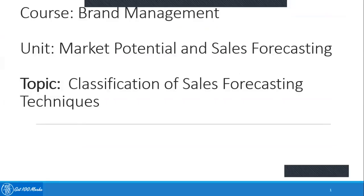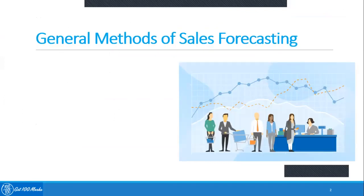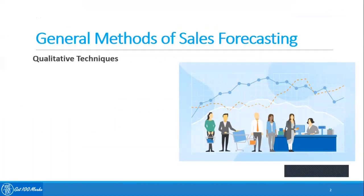Welcome to the Brand Management course, Unit: Market Potential and Sales Forecasting, Topic: Classification of Sales Forecasting Techniques. The general methods of sales forecasting under qualitative techniques include market research, panel consensus, historical analogy, Delphi method, expert evaluation technique, and jury of executive opinion.